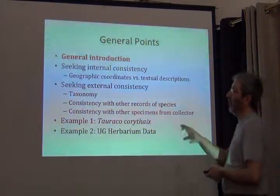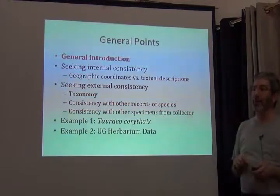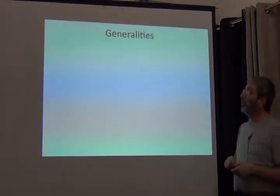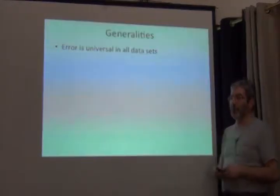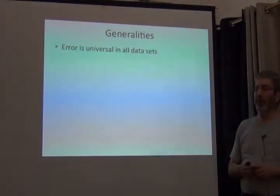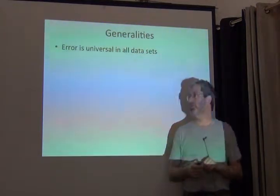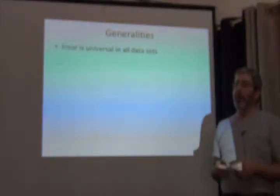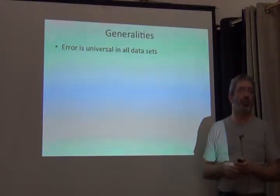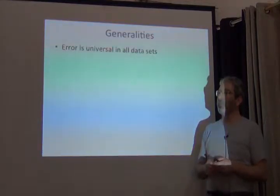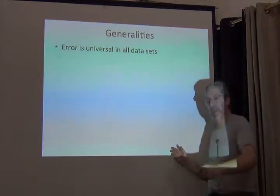I want to talk about internal and external consistency in data, and then give you two different examples I've worked. One thing we all have to get used to is the idea that error is universal. I have had conversations with people at many biodiversity information institutions — for example, museums — where I'm told something along the lines of: well, we have our data capture done and we're ready to serve the data, but we're cleaning the data first. We want to get our data perfect, and then we'll put it out.